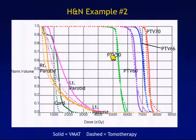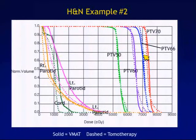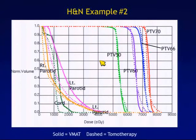For a more complex head and neck case with four prescription levels, tomotherapy has the advantage that there's not the interconnectedness of beam shapes. With VMAT, because each shape is connected one to the next, it may be harder to get the same degree of modulation. But this was the kind of case that impressed us — we saw that with VMAT, we really can get tomotherapy-like plan quality. The VMAT plan showed a little more uniform target dose but slightly less sparing, though generally very equivalent plan quality.